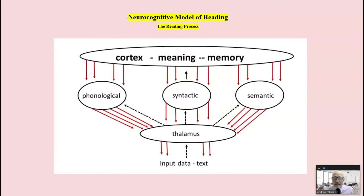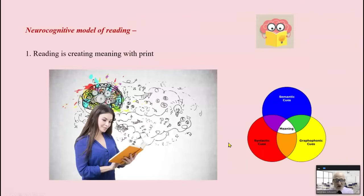Now, the neurocognitive model does account for this. It's a two-way flow of information. You encounter the data in the text. It goes to the relay station, the thalamus. And from there, three cueing systems are used. Not just phonics, but syntax and semantics. And from there, it flows up to the cortex. But here, again, almost 10 times more information is flowing down.